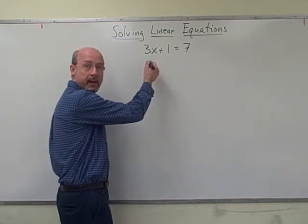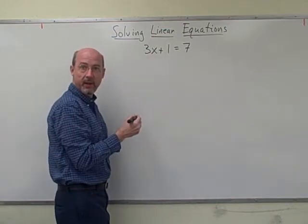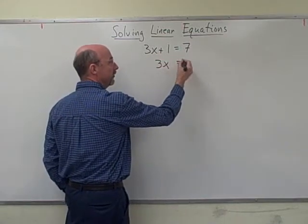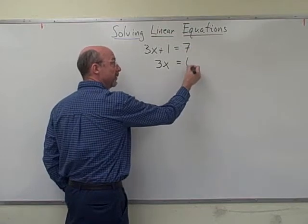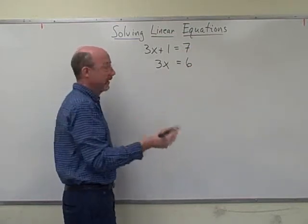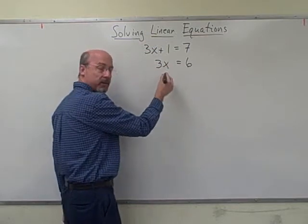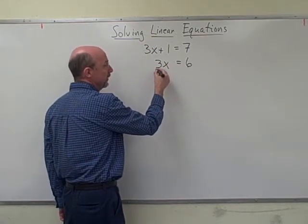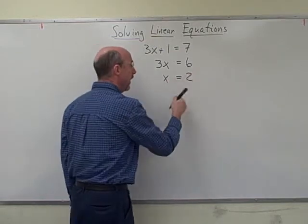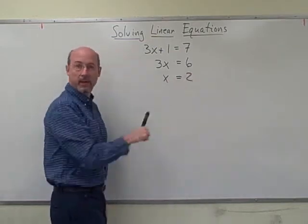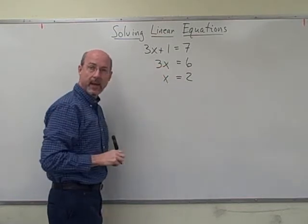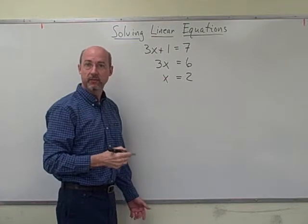We're going to first start out by subtracting one from each side of the equation. So if I subtract one from the left side, I'm going to get 3x. And if I subtract one from the right side, I'm going to get 6. Now we're almost with an isolated x. All we have to do is divide both sides by 3. If I divide the left by 3, I just get x. If I divide the right by 3, I get 2. And there, I've got what I want, an isolated x. We can take the 2, substitute it back in here, and check that it gives a true statement.